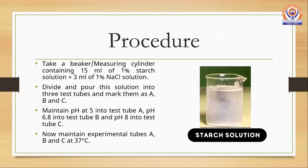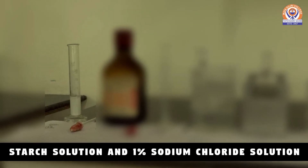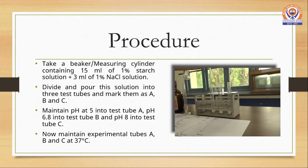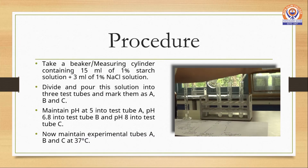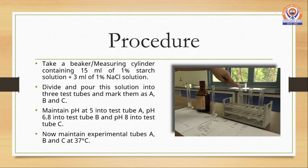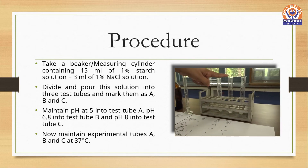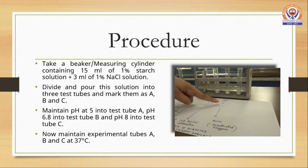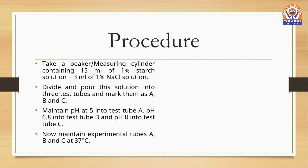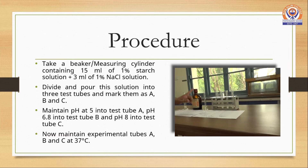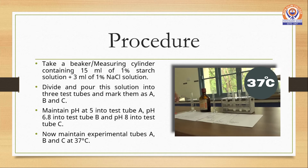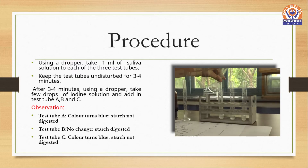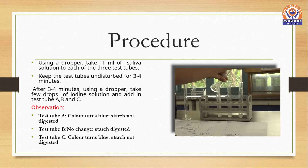Now take a beaker or a measuring cylinder containing starch solution and sodium chloride solution, and pour this into test tubes A, B and C. Test tube A is maintained at a pH of 5, test tube B is maintained at the pH of 6.8, while test tube C is maintained at the pH of 8. All these test tubes are maintained at the temperature 37 degrees Celsius or room temperature. Now using a dropper, take 1 ml of saliva solution and add it to all three test tubes A, B and C.